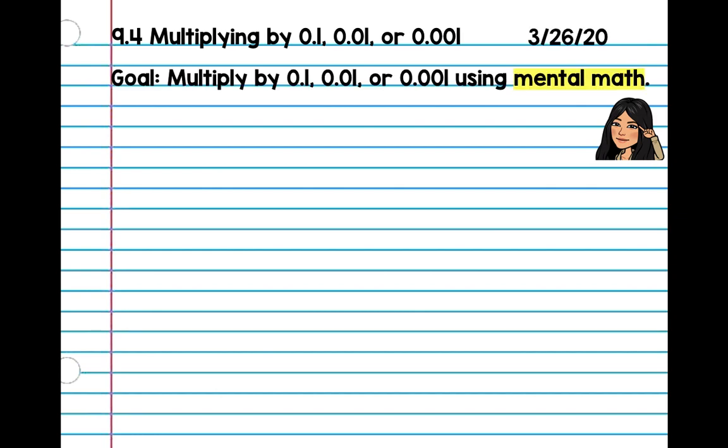Alright, so our goal today, we're going to multiply with these numbers and we're going to use mental math. As I've said earlier in our lessons back at school, we learned that decimals are just fractions. We know that 0.1 is really one tenth, 0.01 is one one hundredth, and 0.001 is one one thousandth.